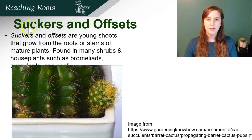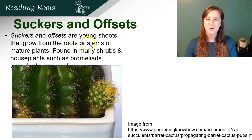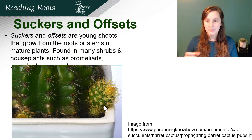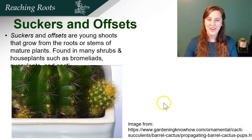Some plants also have suckers and offsets — young shoots that grow from the roots or stem of the mature plant, found in many shrubs and houseplants. With cacti, you can carefully remove these using a glove and start a whole new plant.